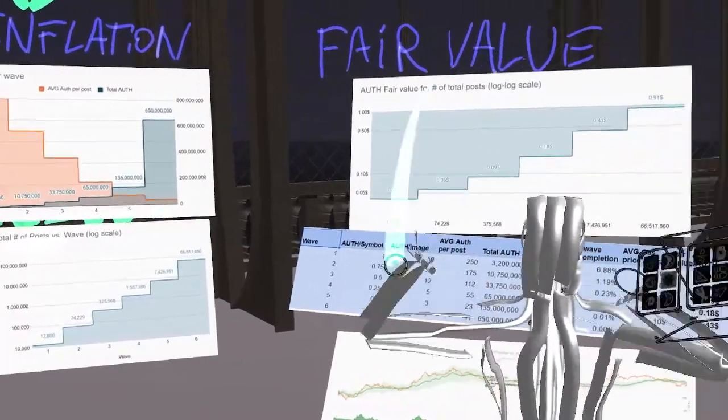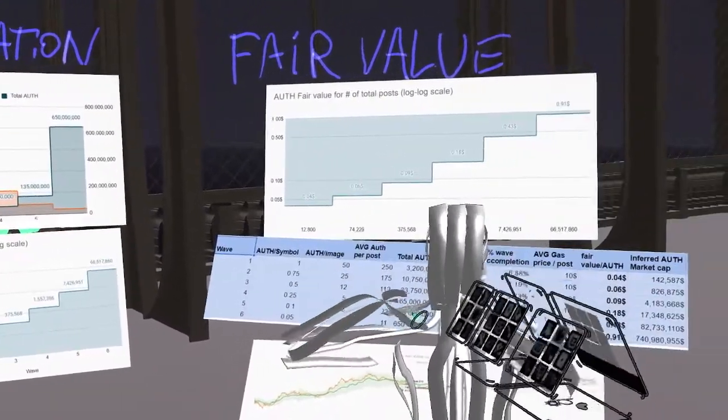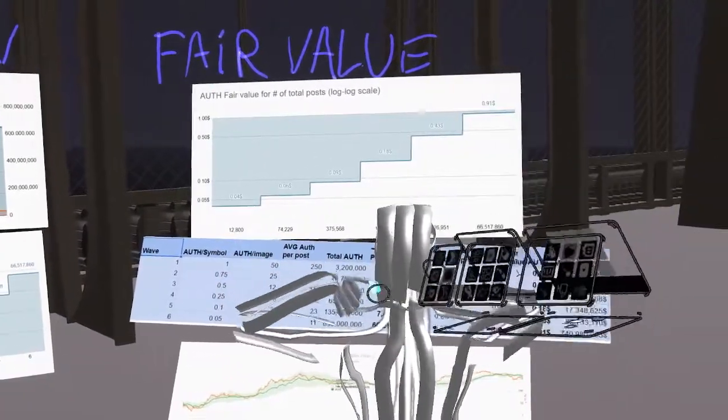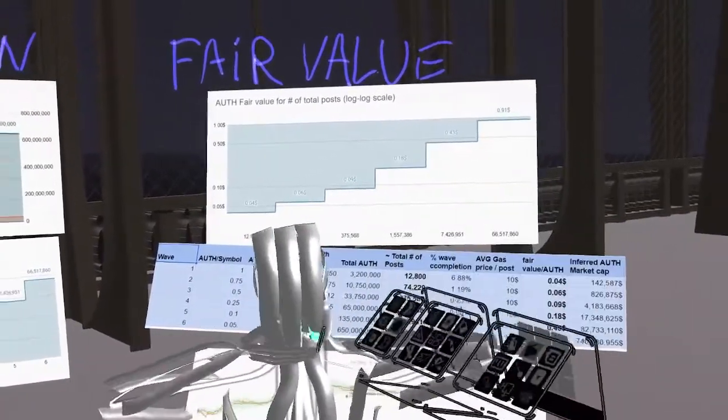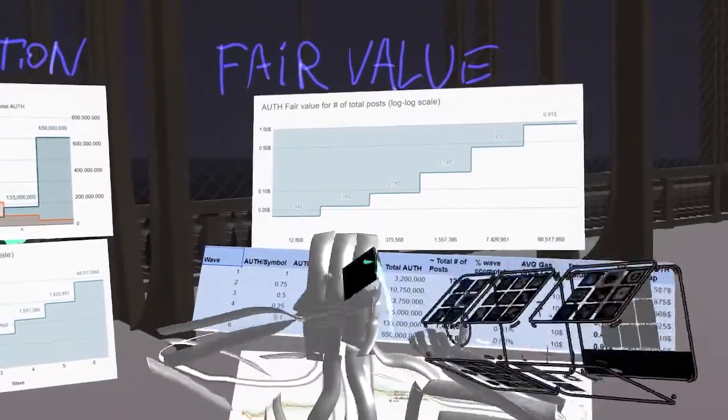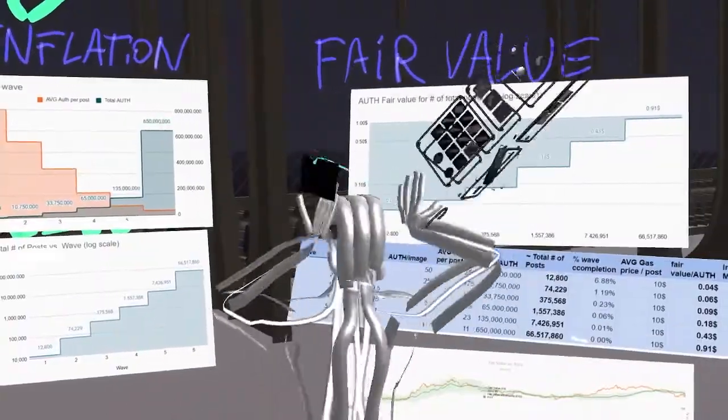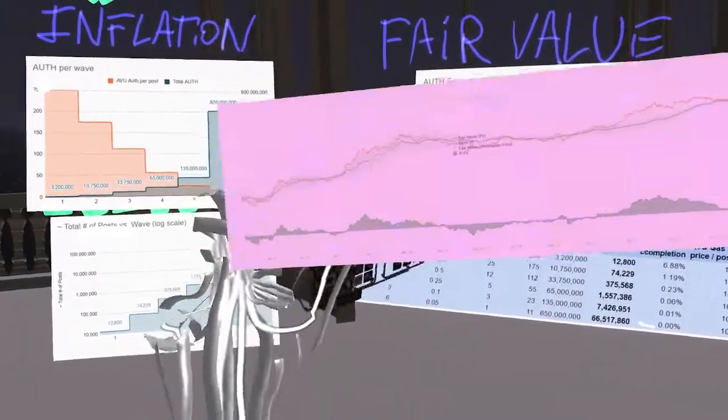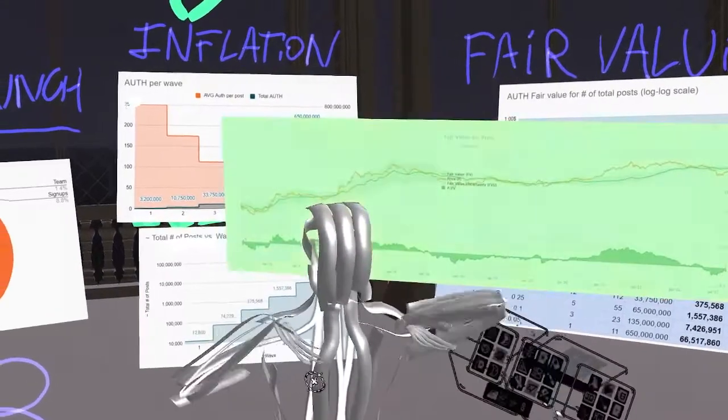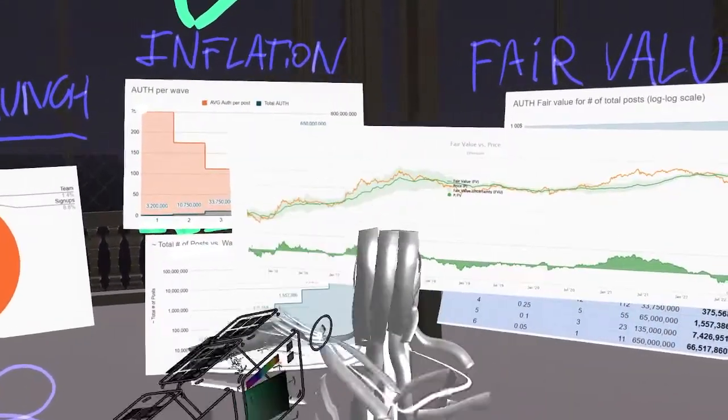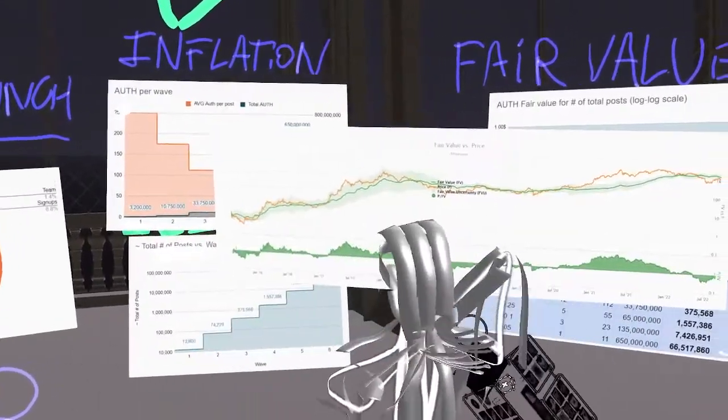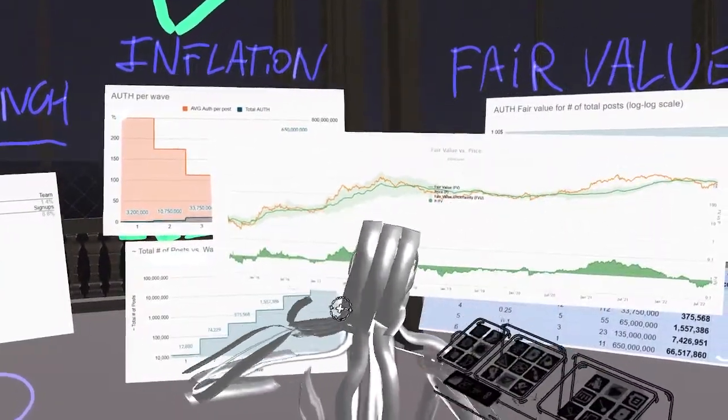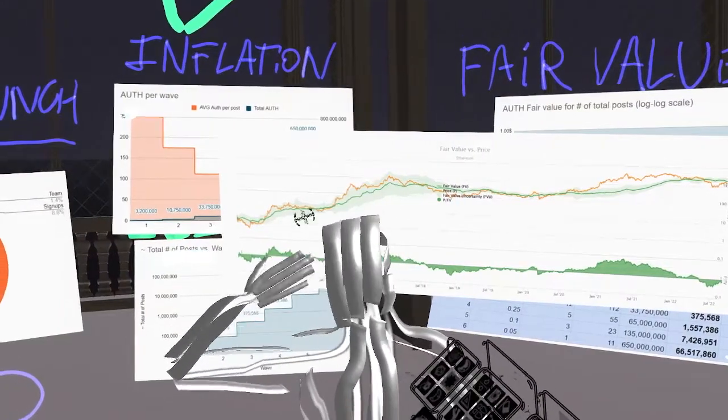Now I want to introduce a new metric for Authenticity. The goal is to try to estimate in orders of magnitude the price that the auth token should be able to get to. The metric I want to introduce is the fair value. Fair value is a metric that is often used to talk about the price of Ethereum or the price of Bitcoin.